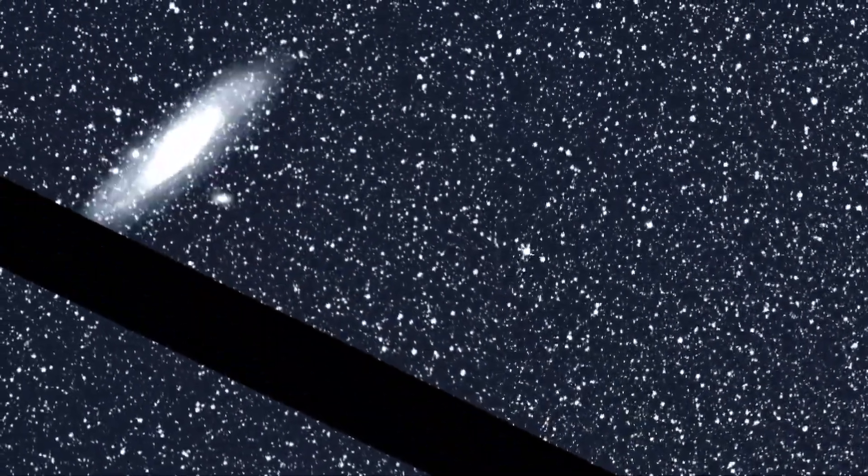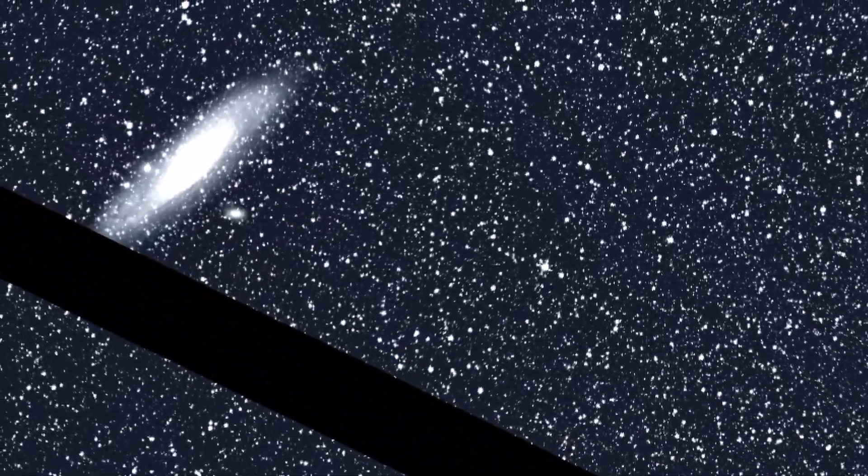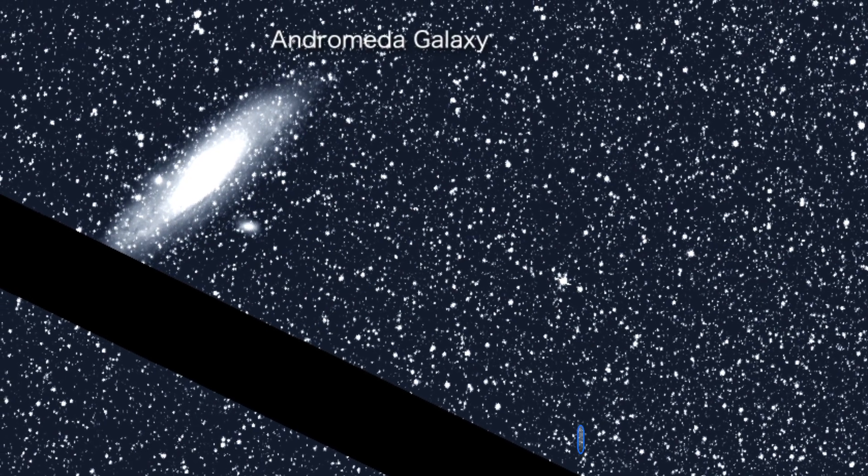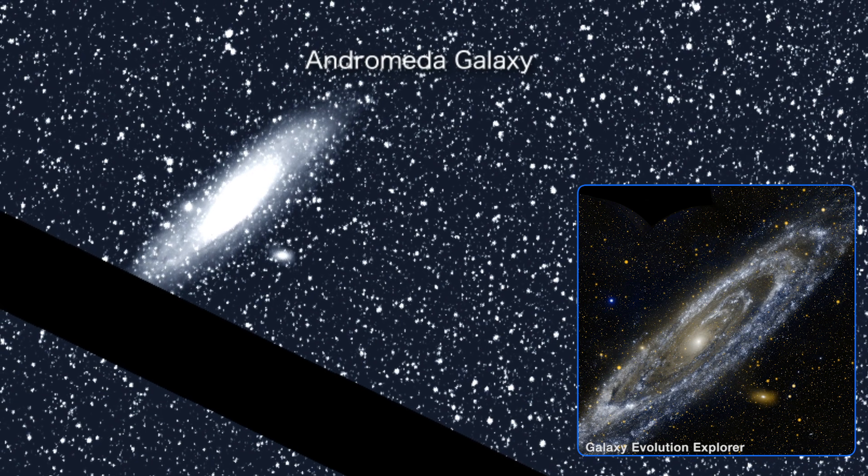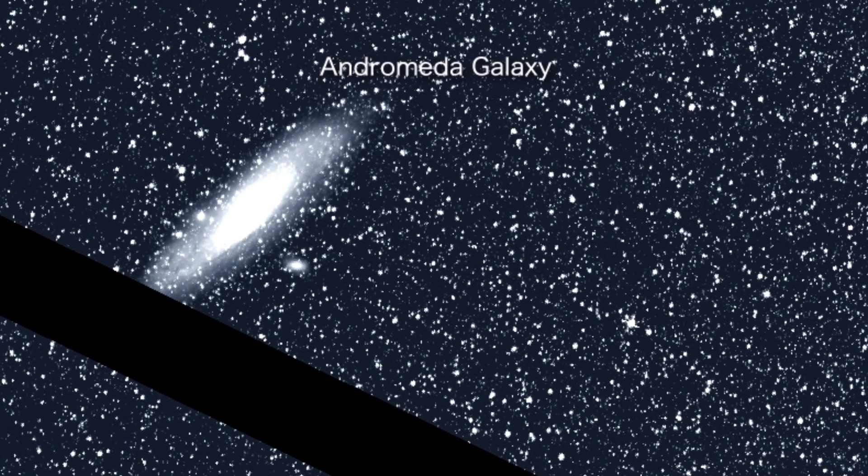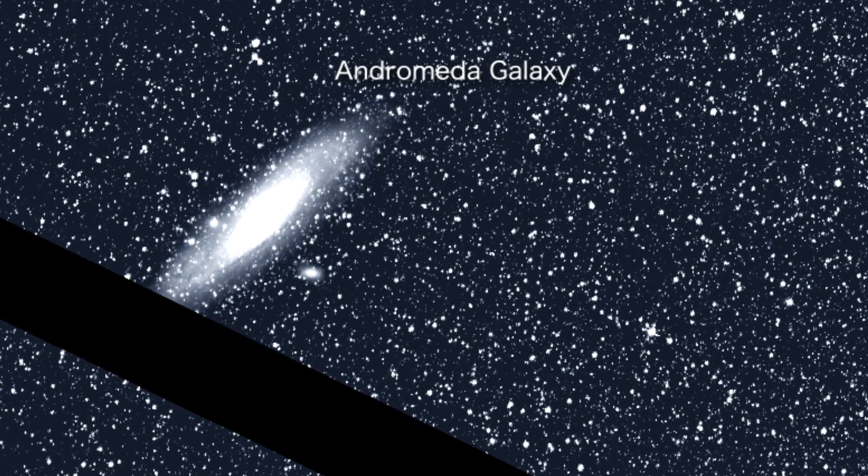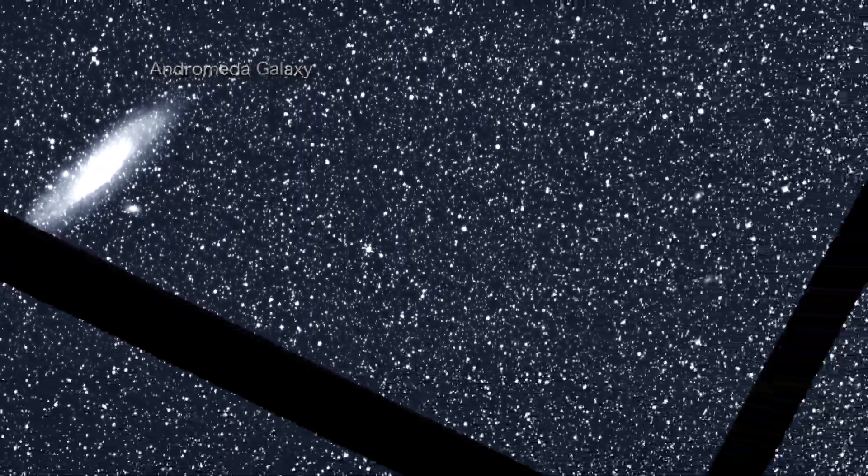Peering beyond the confines of our own galaxy, TESS imaged the closest neighboring spiral galaxy. Visible by eye as a hazy patch, the Andromeda galaxy, located 2.5 million light-years away, is a city of stars as vast as our own Milky Way.